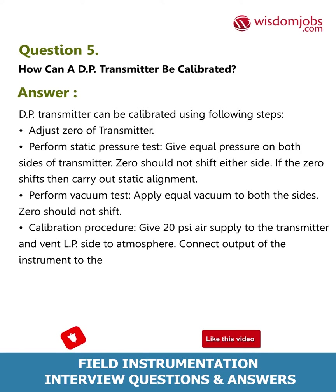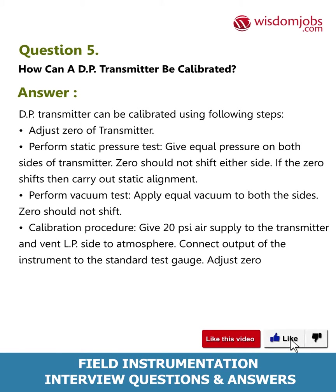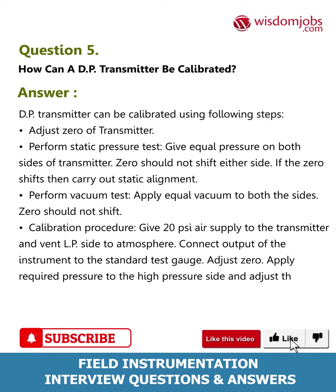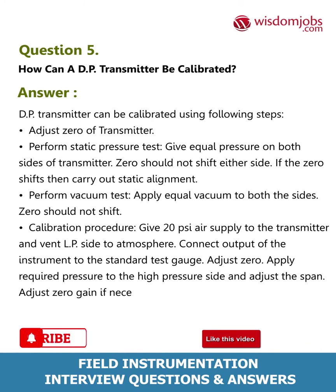Calibration procedure: Give 20 PSI air supply to the transmitter and vent the LP side to atmosphere. Connect the output of the instrument to the standard test gauge. Adjust zero. Apply required pressure to the high pressure side and adjust the span. Adjust zero gain if necessary.